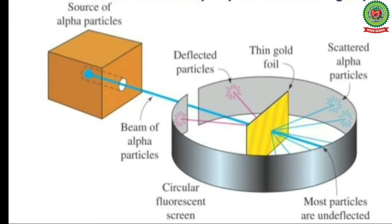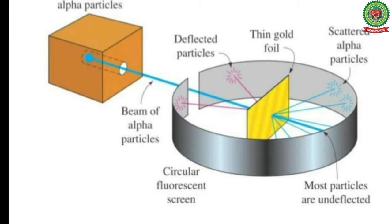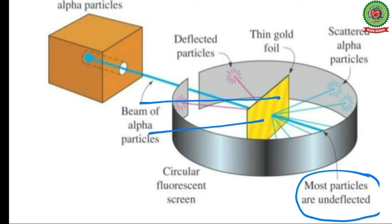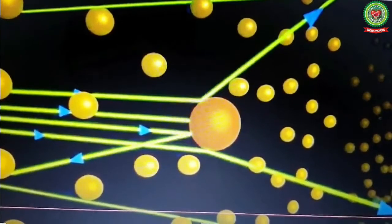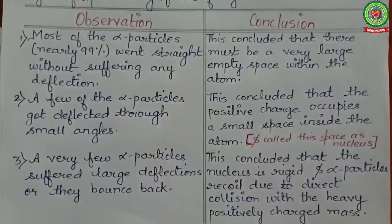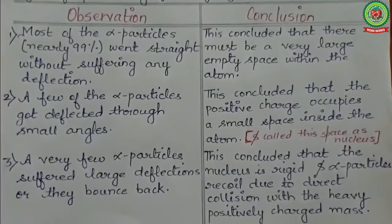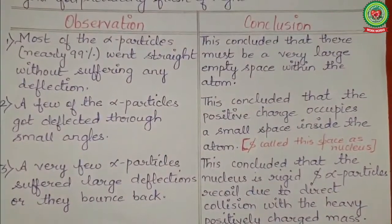From this experiment, three observations were made. First, most alpha particles passed straight through the gold foil — they were undeflected. Second, very few alpha particles got deflected at a very small angle. Third, a very small number of alpha particles bounced back from their original path.